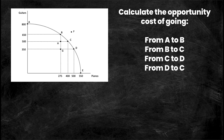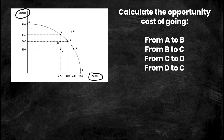So here we have a PPF curve. The good on the y-axis is guitars, and the good on the x-axis is pianos. Anywhere along the PPF curve I can be producing guitars, pianos, or a combination of both. As I produce more pianos I give up more guitars, and vice versa, so the trade-off is bowed outwards. For example, at point A I can produce 800 guitars but zero pianos, whereas at point E I can produce 550 pianos but no guitars — and so on for points B, C, and D.